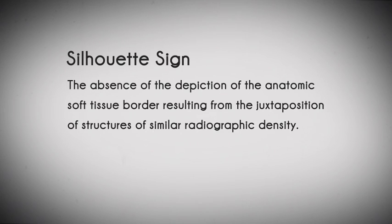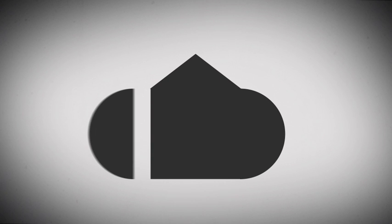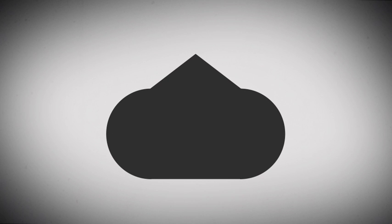A positive silhouette sign is not always indicative of disease. To illustrate this concept by analogy, here there are four shapes — a square, a triangle, and two semicircles — all the same color. When the shapes are adjacent, they appear to form one large shape sharing a common outer border. However, simply change the color of one of the shapes and it is easy to see there are four separate shapes, adjacent but distinct.